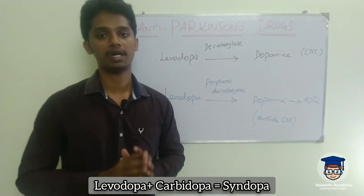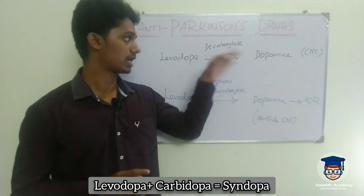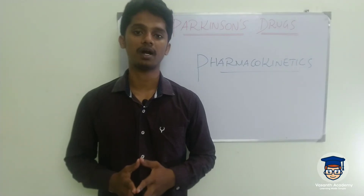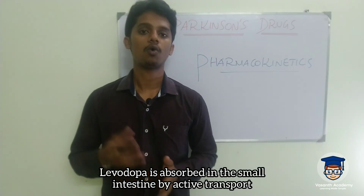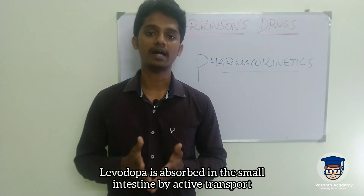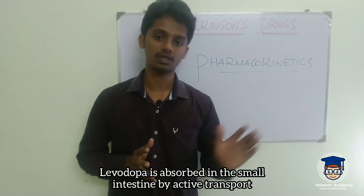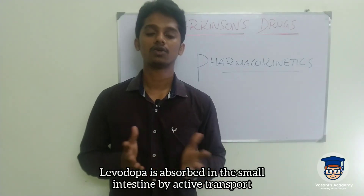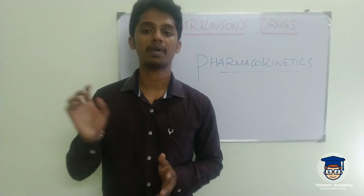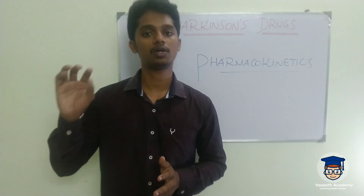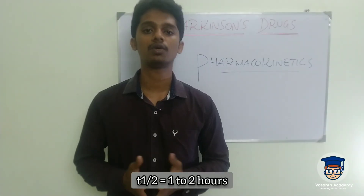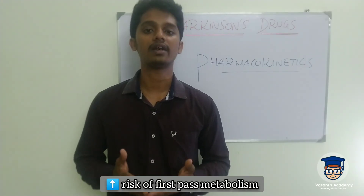Now let's talk about pharmacokinetics. Levodopa is taken orally, passes through the stomach to the small intestine, and is absorbed by active transport. It reaches blood circulation and then the brain. The primary area of action in the brain is the striatum, where dopamine levels need to be maintained. The half-life of Levodopa is approximately one to two hours, and there is an increased risk of first-pass metabolism.